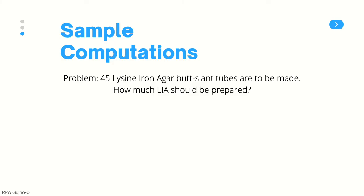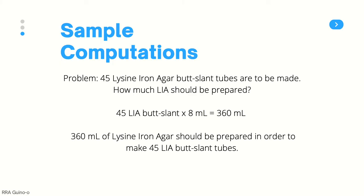Here we have another problem: we need to make 45 pieces of lysine iron agar, which is a common biochemical test, in a butt slant tube. How much LIA should be prepared? Note that you need at least 5 to 8 ml of media for a butt slant preparation. You will need 360 ml of lysine iron agar. The equation is simply 45 LIA butt slants times 8 ml per butt slant, which is equivalent to 360 ml.